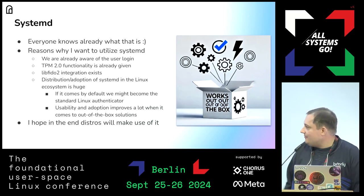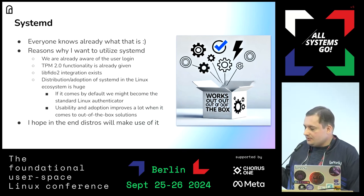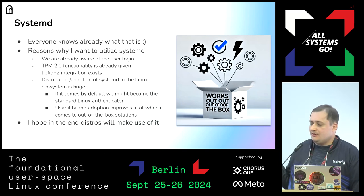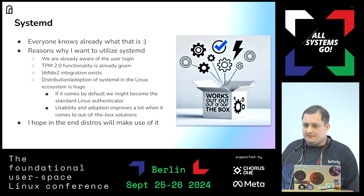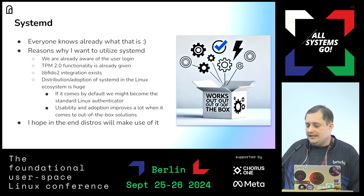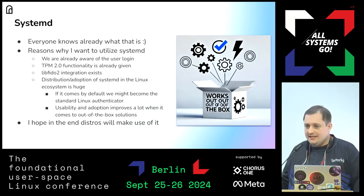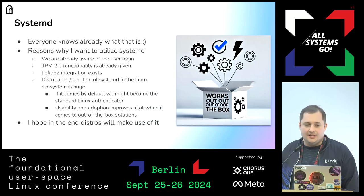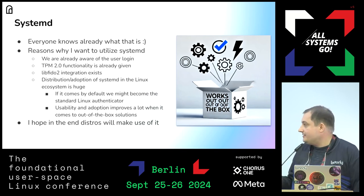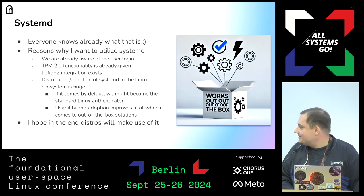Then we come to systemd — everyone knows what it is. The reason I chose systemd is because it has huge adoption; a lot of distros have it, and we anyway probably need some kind of daemon to implement this, so it's a good fit. We could have our own standalone daemon, but it's better if it comes out of the box. Systemd already supports the libfido2 library and has TPM functionality — so why not?